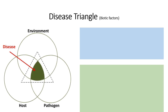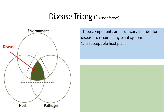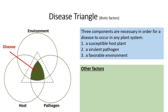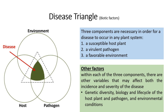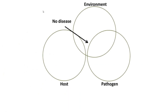Disease triangle: diseases develop as a result of the interaction between three most important components, which are a susceptible host plant, a virulent pathogen, and a favorable environmental condition. Other related factors include genetic diversity, biology and life cycle of the host plant and pathogen, and the environmental conditions. As illustrated by the diagram, even if the environmental conditions are favorable and pathogens are virulent, if the host plant is resistant against the pathogen then the disease will not occur.